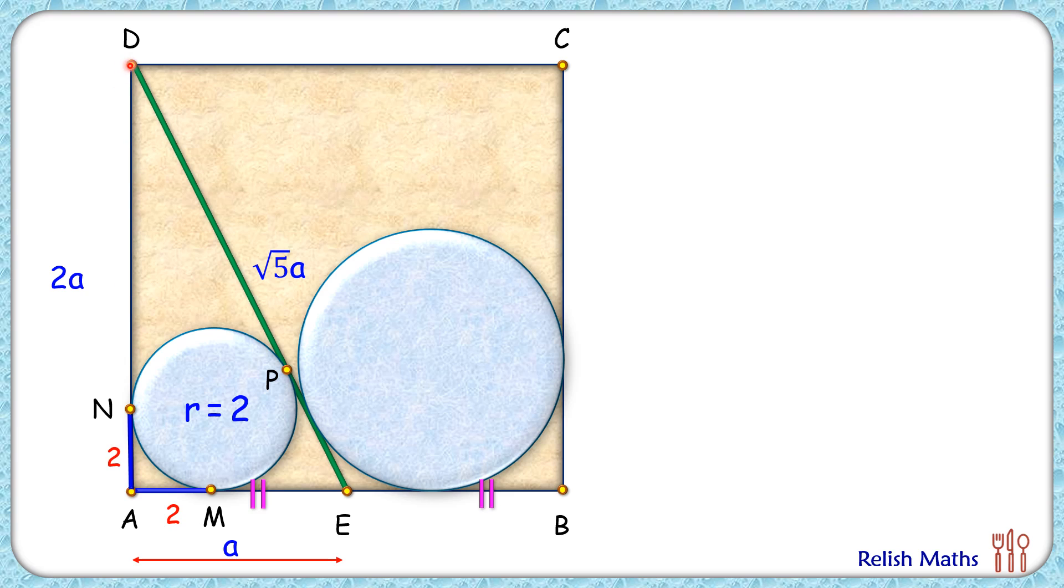Now here, AM length is 2 centimeters, AN is also 2 centimeters. Thus length DN will be 2a - 2 centimeters. From an external point, two tangents are drawn; they will be equal in length. Thus length DP will be 2a - 2 centimeters. Here AE is a centimeters and AM is 2, thus the remaining length EM will be a - 2 centimeters, and EP will be the same, a - 2.